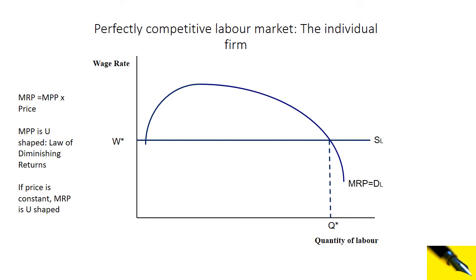The reason the marginal physical product curve is U-shaped is due to the law of diminishing returns. As we add more and more workers to a fixed amount of capital, the productivity of workers originally rises and then falls. We played a game where you were making boxes, gradually adding each worker to a fixed classroom space and fixed equipment. As you add more and more workers, each extra worker initially produces more boxes, but eventually each worker produces fewer boxes — too many cooks spoil the broth. Workers get in each other's way and queue to use capital equipment.